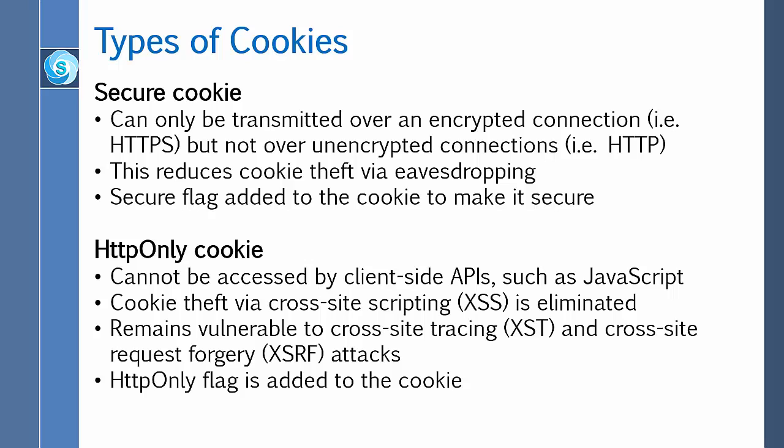Next is HTTP-only cookie. It cannot be accessed by client-side APIs such as JavaScript, so cookie theft via cross-site scripting is eliminated. Cross-site scripting is a type of computer security vulnerability typically found in web applications; it enables attackers to inject client-side scripts into web pages viewed by other users. However, it remains vulnerable to cross-site tracing and cross-site request forgery attacks. An HTTP-only flag is added to the cookie.